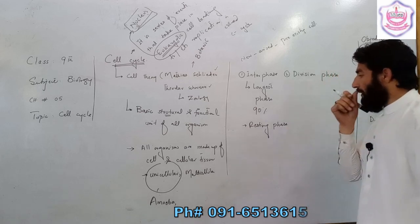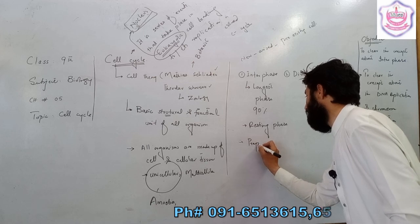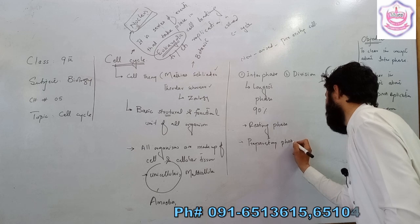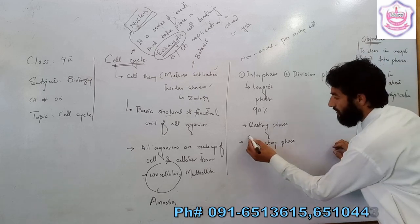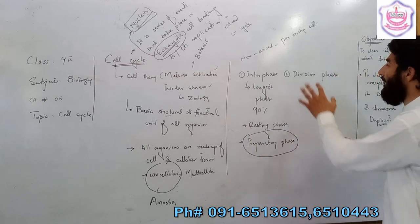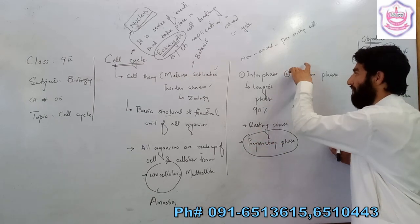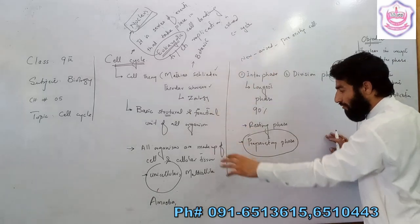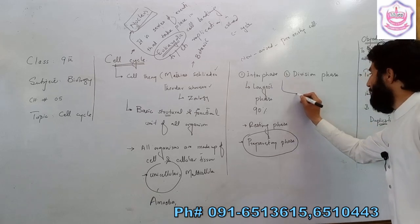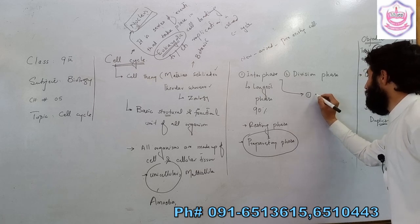Interphase is the longest phase of the cell cycle. It is also known as the resting phase or preparatory phase. The interphase is further divided into sub-phases: G1 phase, S phase, and G2 phase.